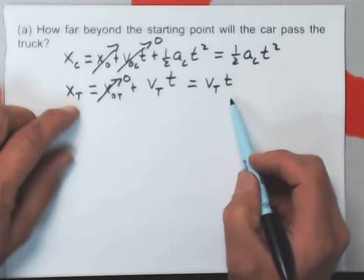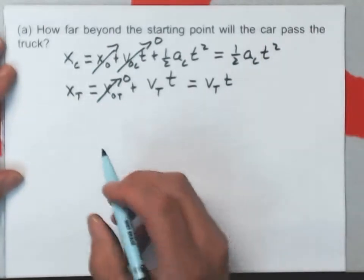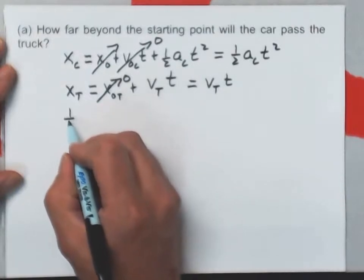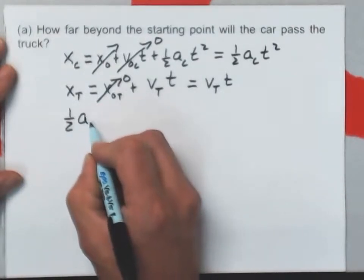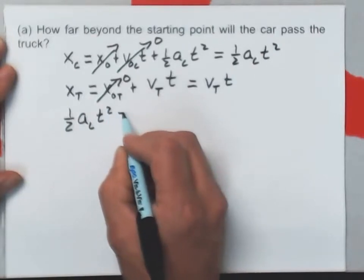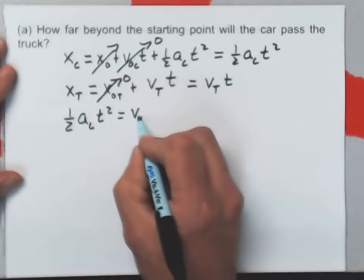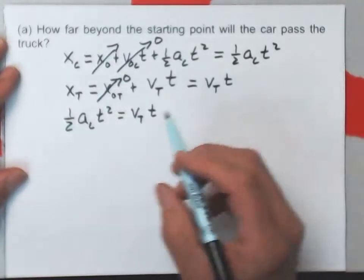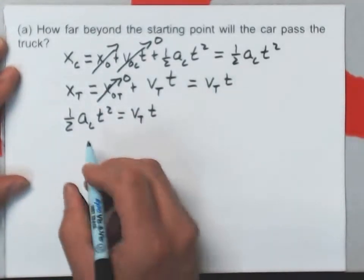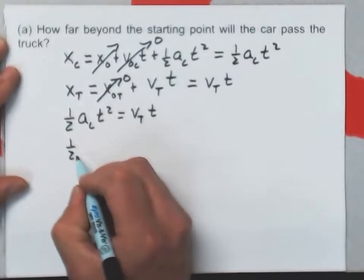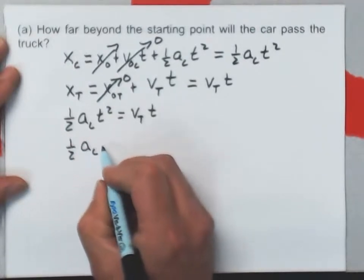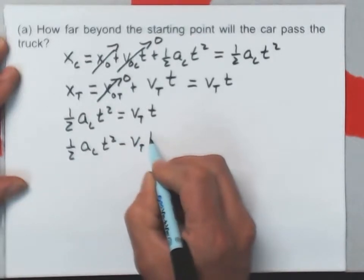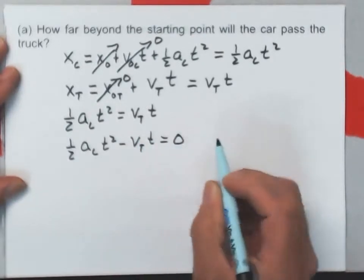The car catches the truck when these two things are equal. So, I can say that one-half the acceleration of the car times T squared equals the velocity of the truck times T. If I bring this across, I can say one-half the acceleration of the car times T squared minus the velocity of the truck times T is equal to zero.